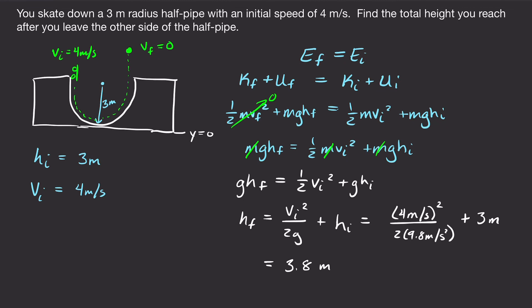So that is roughly 0.8 meters above the top of the half pipe, or 3.8 meters from the ground.